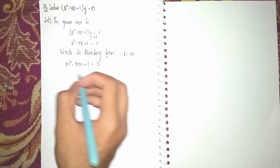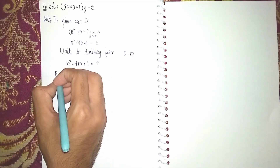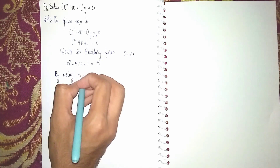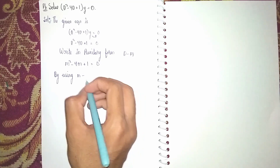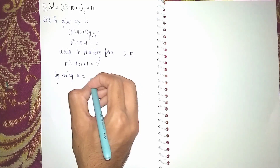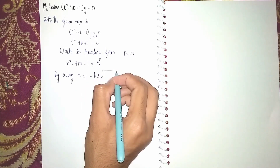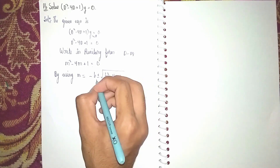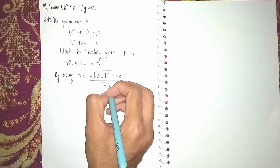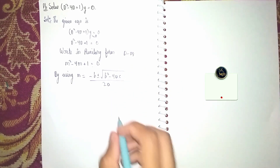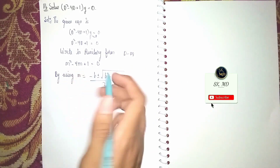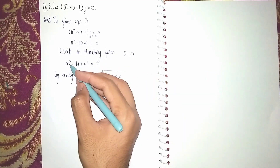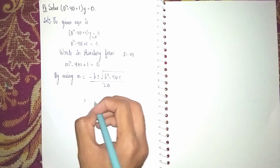So I am using another method — by using the quadratic formula: m = (−b ± √(b² − 4ac)) / 2a. Now here this is a quadratic equation. Here b is 4 and a is 1, the coefficient of m².